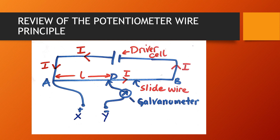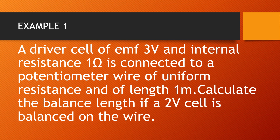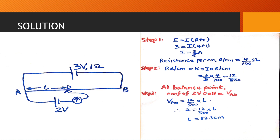This is our first example. A driver cell of EMF 3V and internal resistance 1 ohm is connected to a potentiometer wire of uniform resistance and of length 1 meter. Calculate the balance length if a 2V cell is balanced on the wire. On your left hand side you can see a diagram summarizing this information. We have a driver cell of 3V and internal resistance 1 ohm, a wire AB whose resistance is 4 ohms, and then a 2V battery connected to the lower circuit.